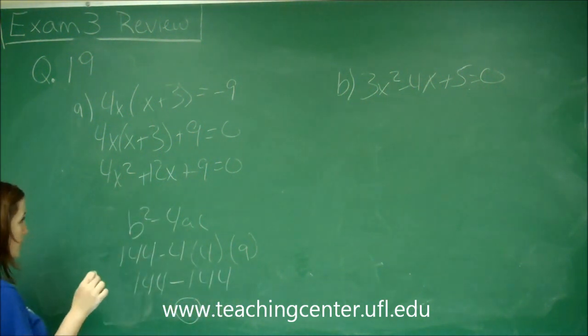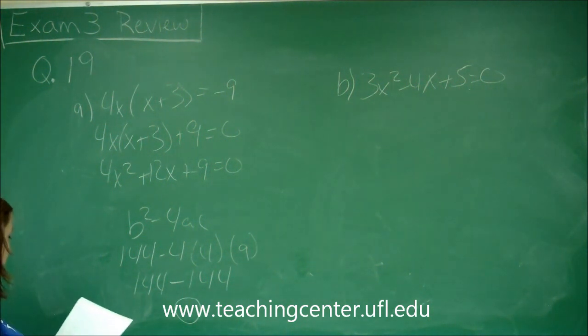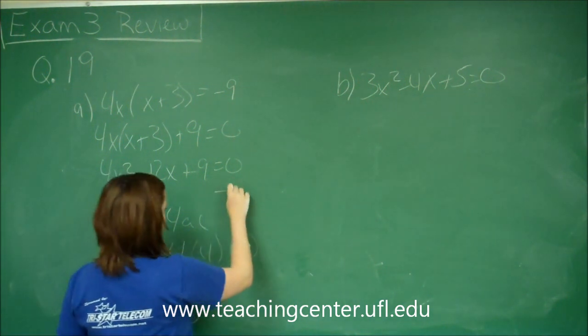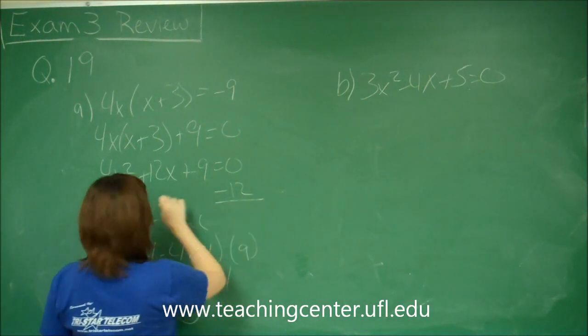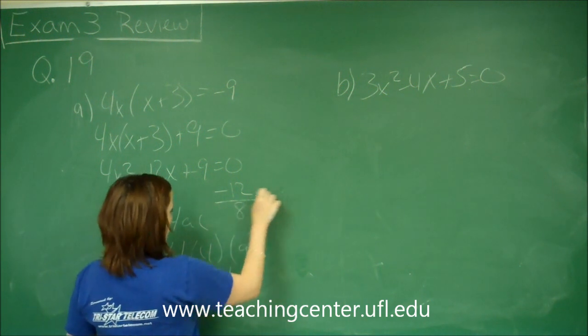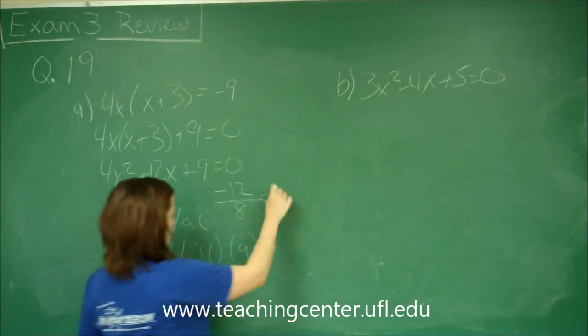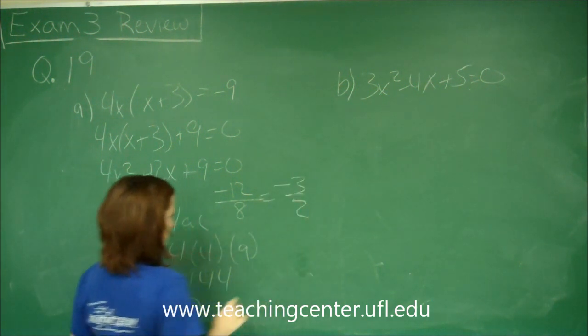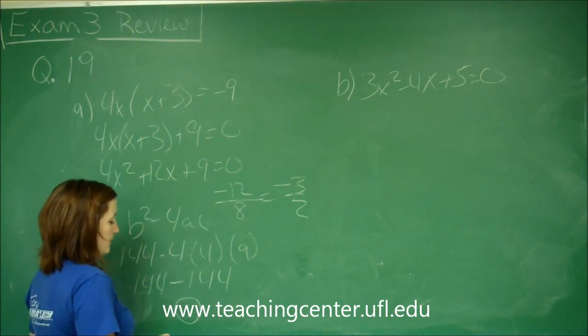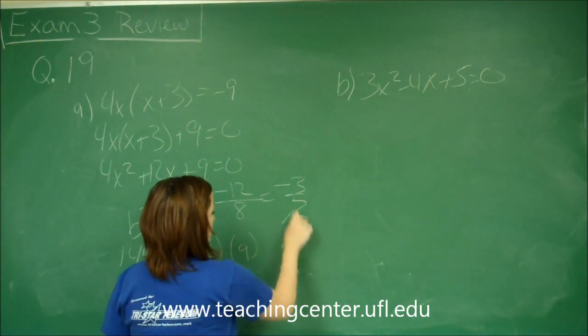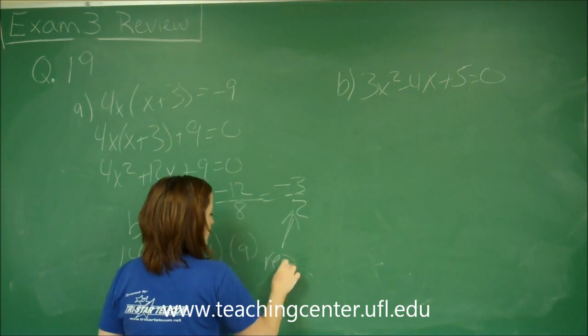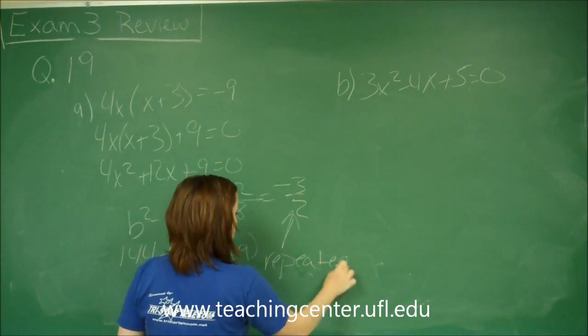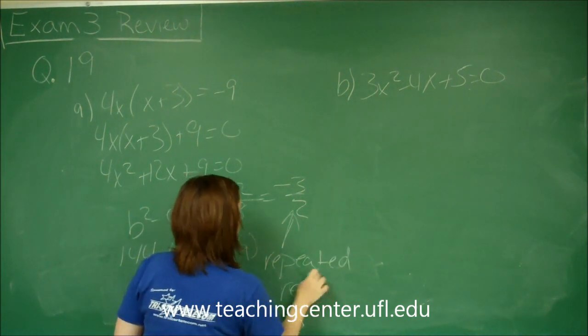So you've got one repeated real solution. And what we have when we solve that is negative b over 2 times a. So 8. So your repeated real solution is going to be negative 3 halves here. So that's repeated real solution.